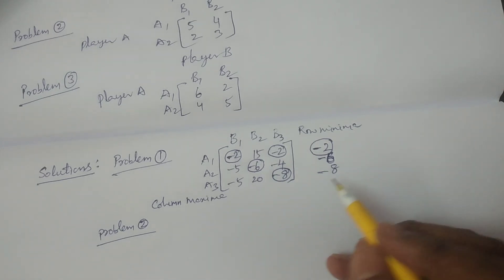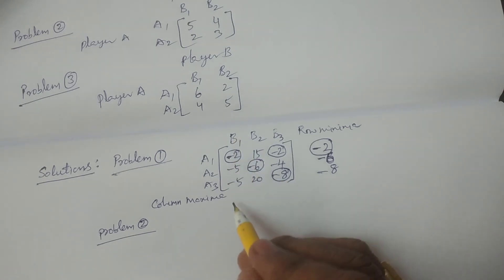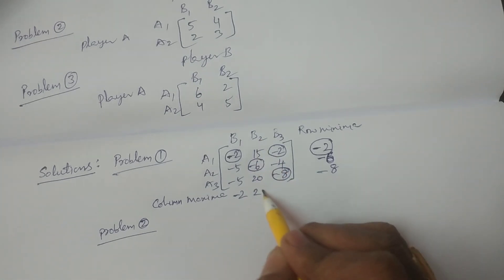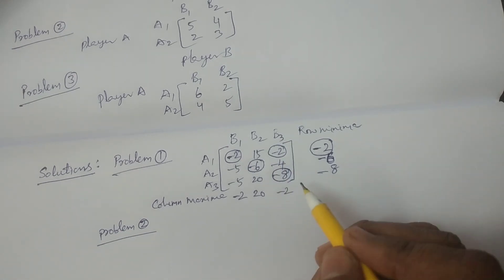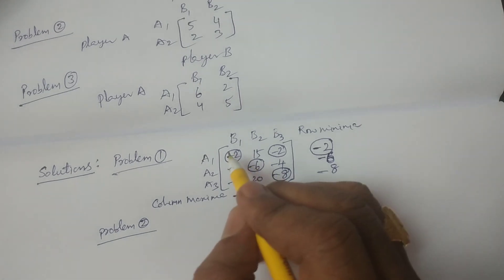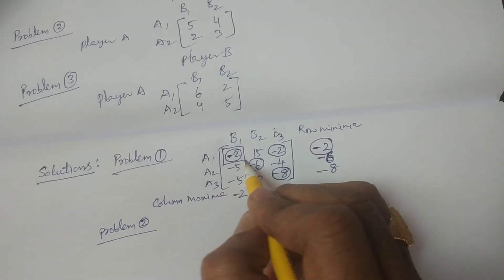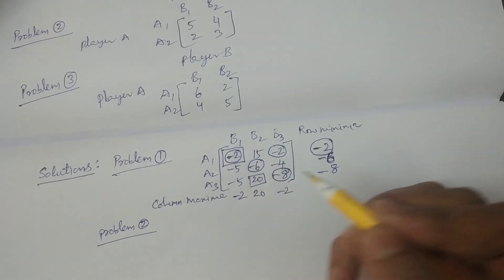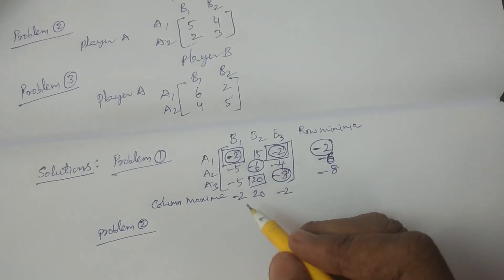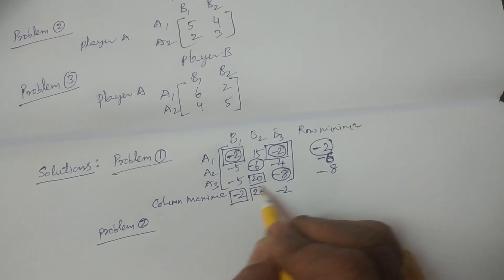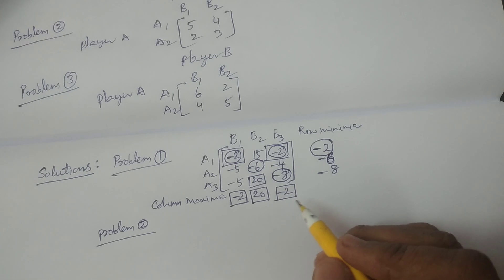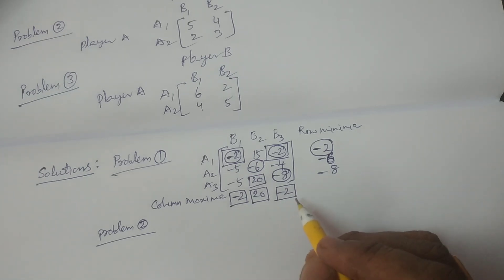Then calculate column maxima. First column maximum element is minus 2. Second column maximum is 20. Third column maximum is minus 2. I draw a rectangle (square box) around these column maxima elements. Among these maximum values, you have to calculate the minimum value — the minimum among the maxima is called minimax.